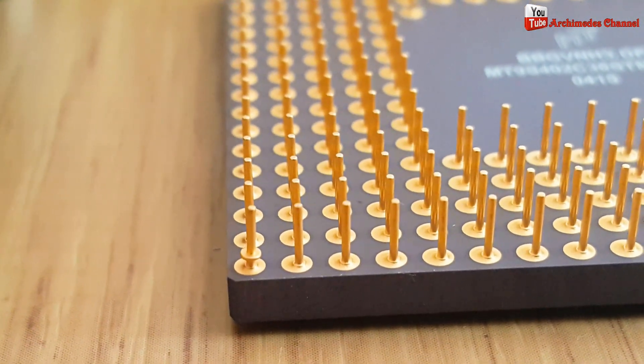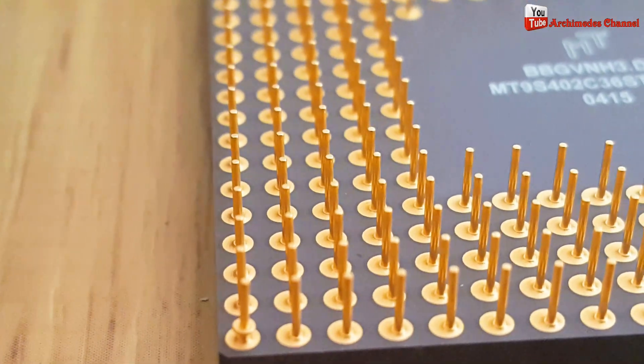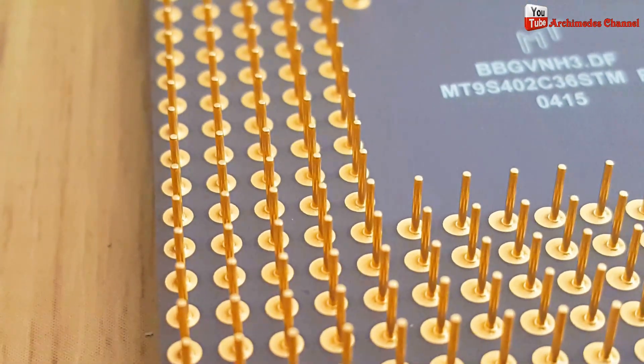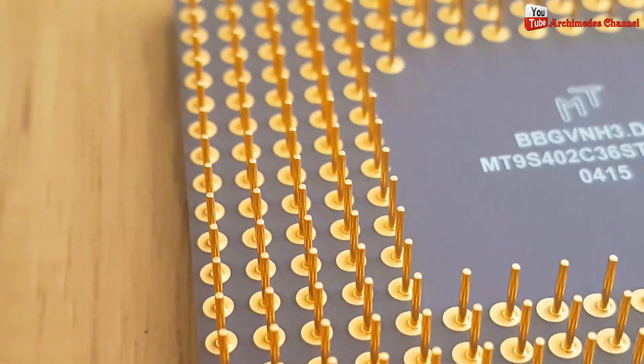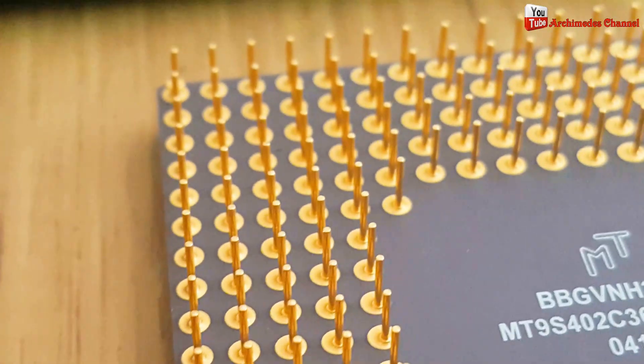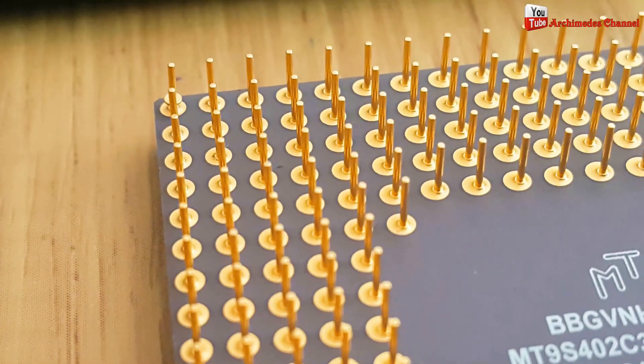Next, the metals are extracted from the electronic waste using a variety of techniques such as shredding, smelting and chemical leaching. The extracted metals, including gold, are then refined and sold to manufacturers for use in new products.